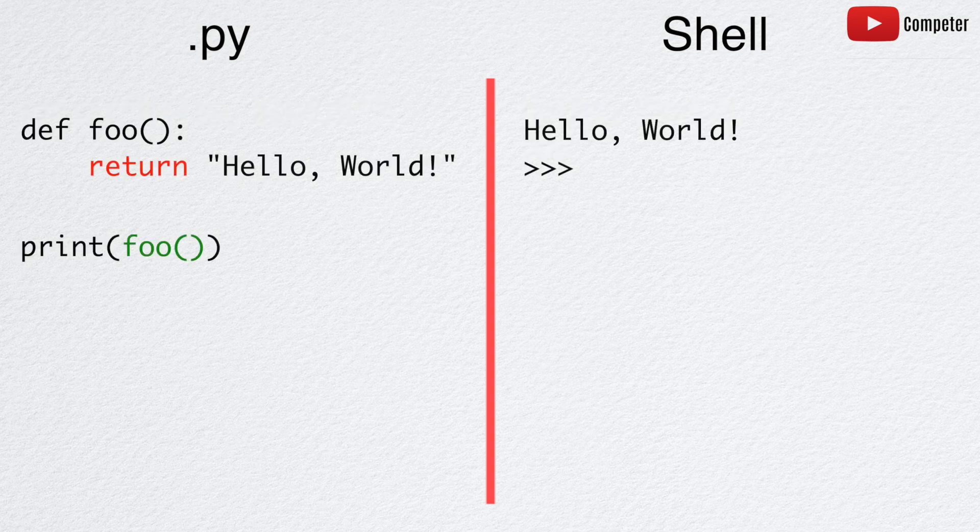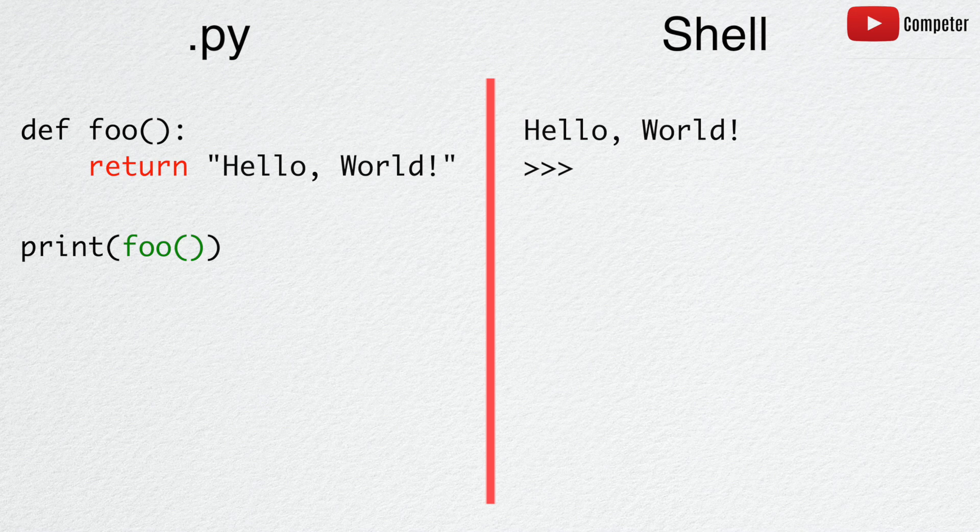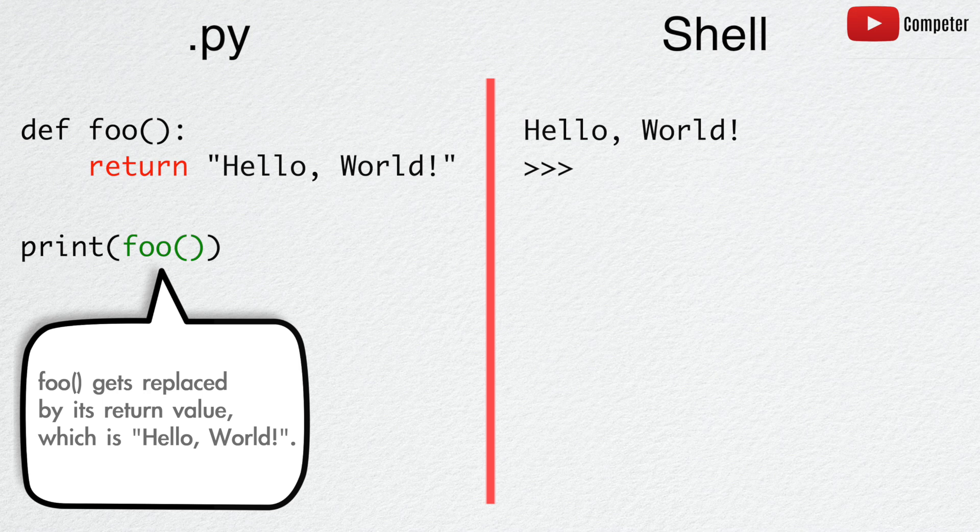On the other hand, a return statement only exists inside of a function, and it is how a function sends back the result to the original caller of the function.